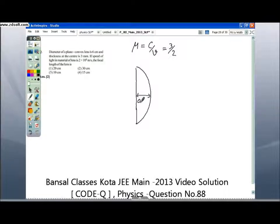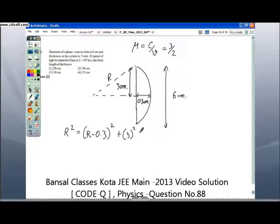The arrangement is like this. This is given as 0.3 cm, total is 6 cm, so this comes out to be 3 cm. To find the radius of curvature R, we can use Pythagoras theorem, which says R squared equals R minus 0.3 squared plus 3 squared. This will give us R equals 15 centimeter.